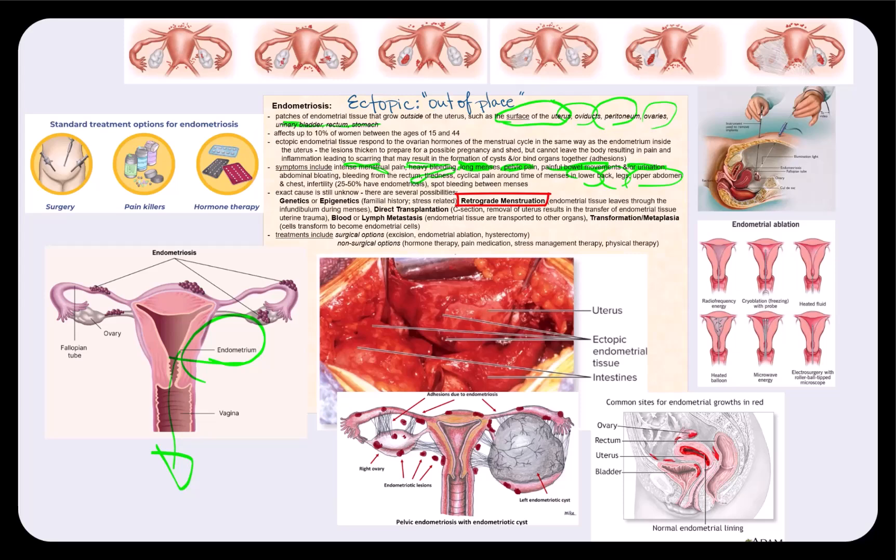Retrograde menstruation is another possibility. This is where the endometrial tissue, the endometrium, leaves not only through the vagina, but it leaves through the infundibulum, because we know that the infundibulum is an opening for the oocyte to enter the oviduct.